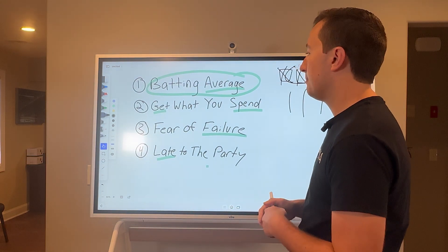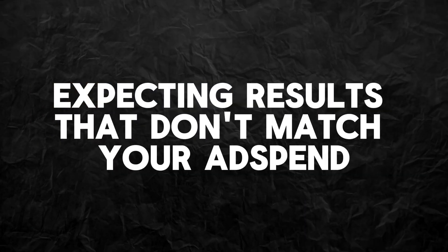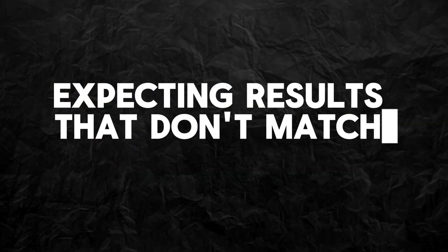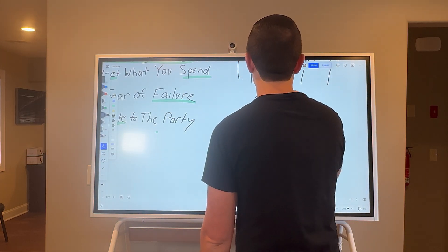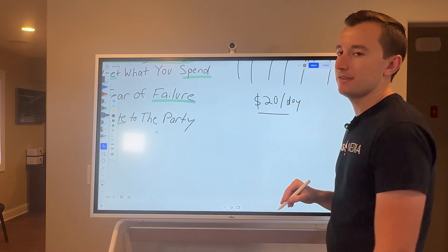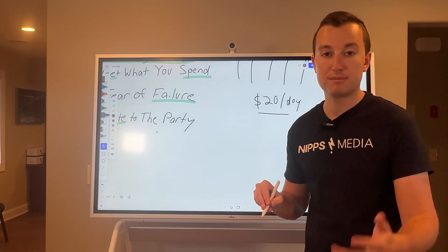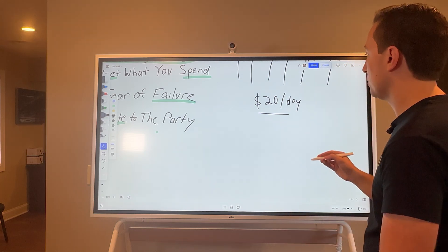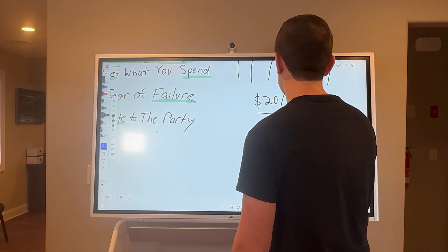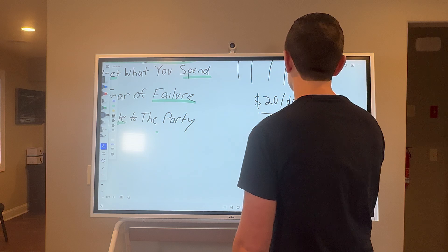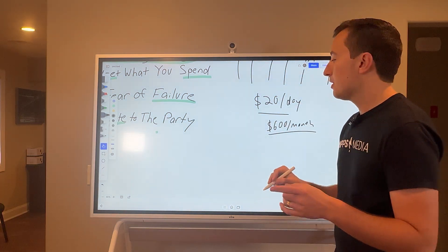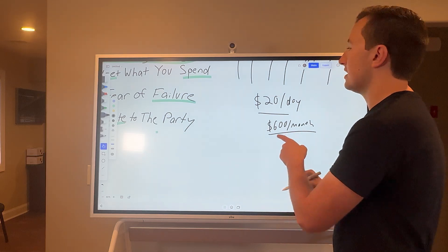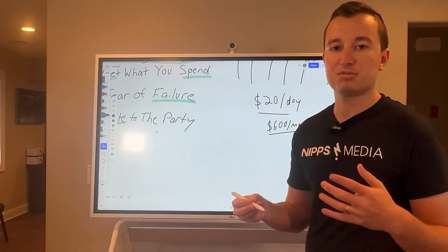That's mistake number one. Mistake number two is: you get what you spend. A mistake many people make is going into advertising — say you're a small business and you dedicate $20 a day on Meta, Google, or whatever platform. So in total during the month, you're spending $600 a month. For a small business, this is a huge chunk of change. But you have to look at advertising in terms of ROAS — return on ad spend.